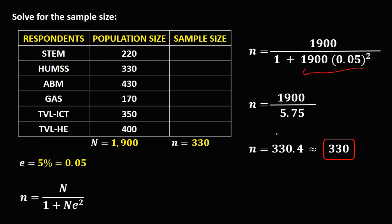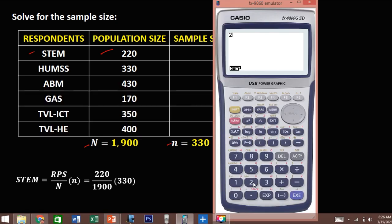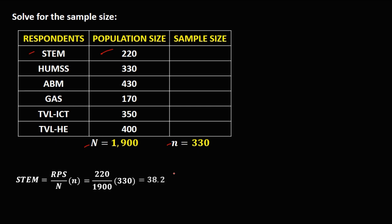Now we solve for the sample size for every respondent. The formula is: respondent population size over the total population size, times the total sample size. For STEM, the respondent population size is 220, so we have 220 over 1900 times 330, which gives 38.2.